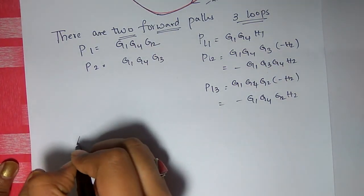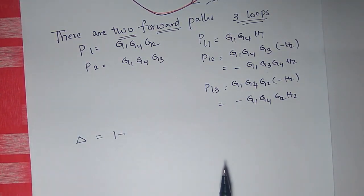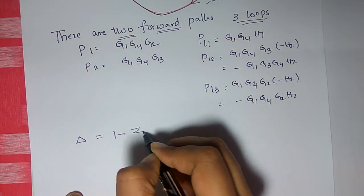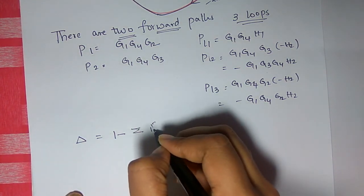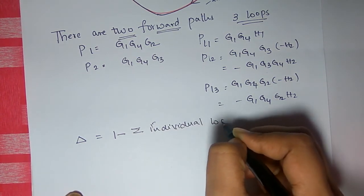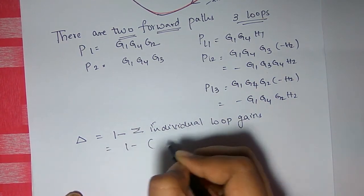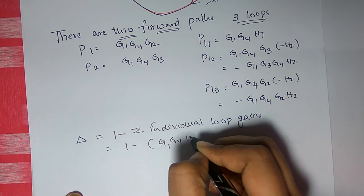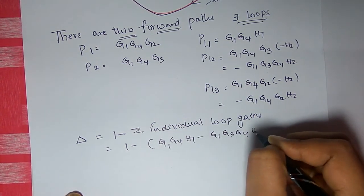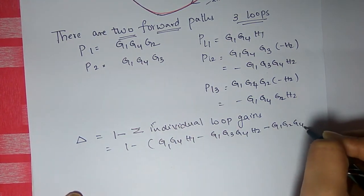Calculate delta. Since all loops are individual (no non-touching loop pairs to consider), delta = 1 minus the sum of individual loop gains: Δ = 1 − G1·G4·H1 − (−G1·G3·G4·H2) − (−G1·G2·G4·H2) = 1 − G1·G4·H1 + G1·G3·G4·H2 + G1·G2·G4·H2.